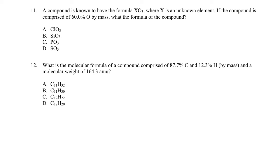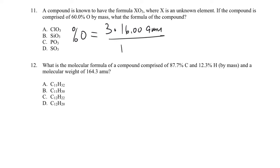We know a compound has a formula XO3, where X is an unknown element. If the compound is 60% O by mass, what is the formula of the compound? This problem is asking us to use the percent O in this compound, which would be equal to 3 times the atomic weight of oxygen, 16.00 AMU, divided by the formula weight of the compound times 100%, equal to 60%.